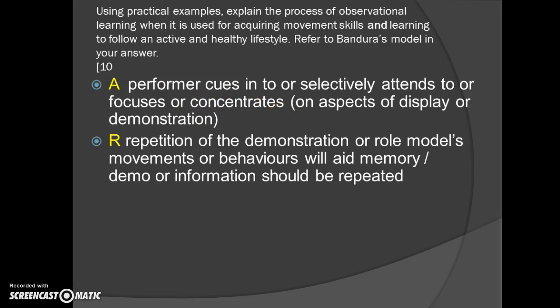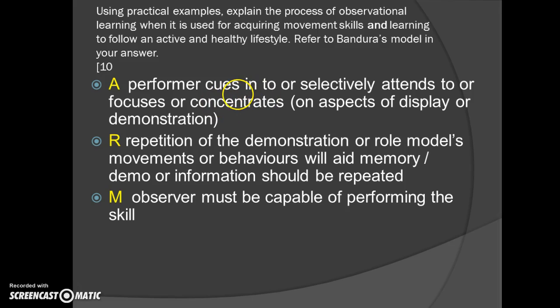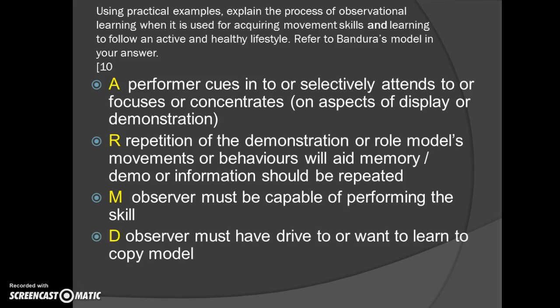The repetition of a demonstration or role model's movement or behavior will aid memory, and then it should be repeated. M is the motivation — the observer must be able to perform the particular skill. And last but not least, the drive or motivation: the observer must actually want to learn and copy that model. That's where high status really comes into its own — people are more likely to follow and copy and have the drive if somebody is of high status. That's why superstars model and exhibit razors, foods, deodorants, or aftershaves — because they believe you are more likely to follow them because of their status.